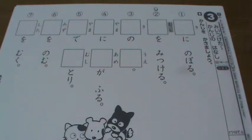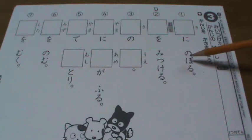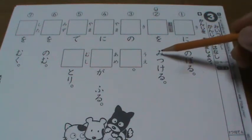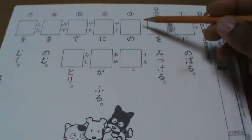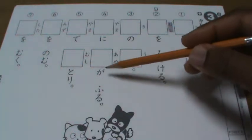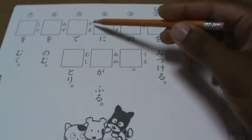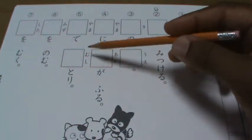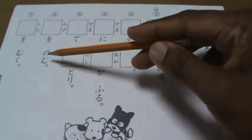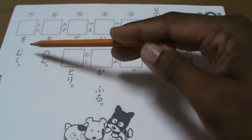Kanji o kakimashou. Let's write kanji together. First I'll read it. Ki ni noboru mushi o mitsukeru. Ki no ue. Yama ni ame ga furu. Yama de mushi tori. Mizu o nomu. Shita o muku.